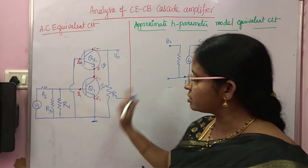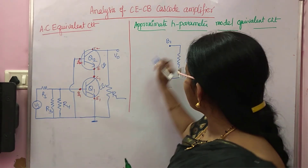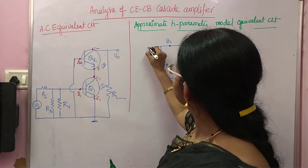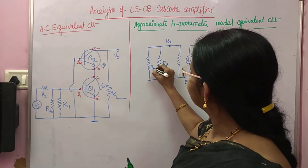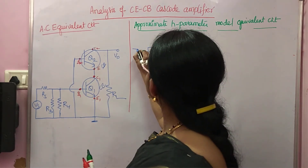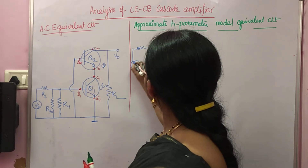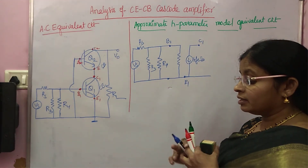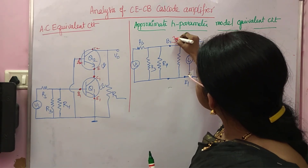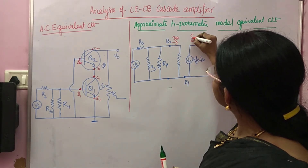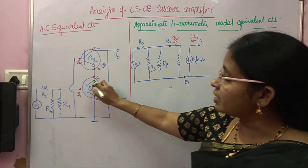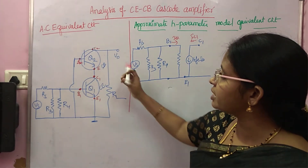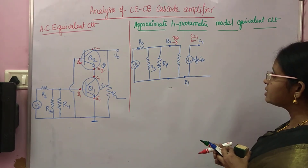At B1 you connect R3 and R4 in parallel. The output of the first stage C1 is directly connected to the emitter E2 of the second stage — there is no resistance between C1 and E2.